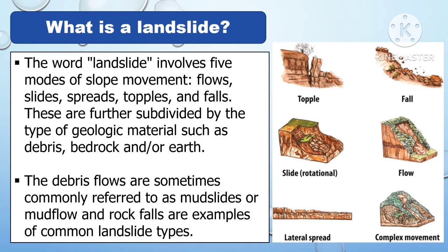The word landslide involves five modes of slope movement: flows, slides, spreads, topples, and falls. These are further subdivided by the type of geologic materials such as debris, bedrock, and earth. Debris flows are sometimes commonly referred to as mudslides or mudflow, and rockfalls are examples of common landslide types.